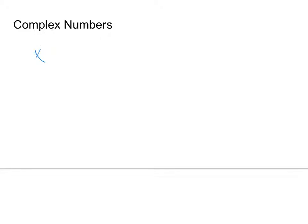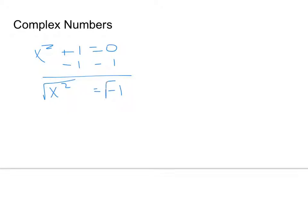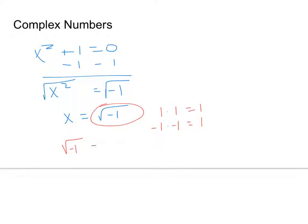Let's take, for example, this equation: x squared plus 1 equals 0. If we solve this, we get x squared equals negative 1, and if we take the square root of both sides, x equals the square root of negative 1. We've never really dealt with this before — 1 times 1 equals 1, and negative 1 times negative 1 equals 1, so what is the square root of negative 1? The answer is i, the imaginary unit.